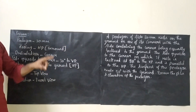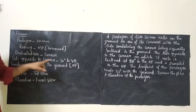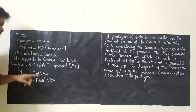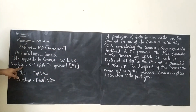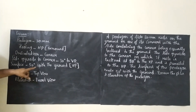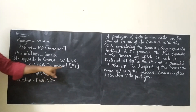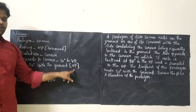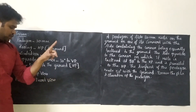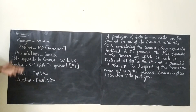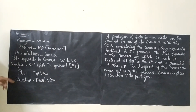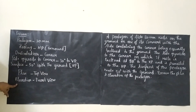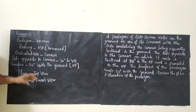The surface of the pentagon makes 50 degrees to the ground. So surface inclination should be 50 degrees with respect to HP. Then draw the plan and elevation of the pentagon. Plan means top view; elevation means front view.